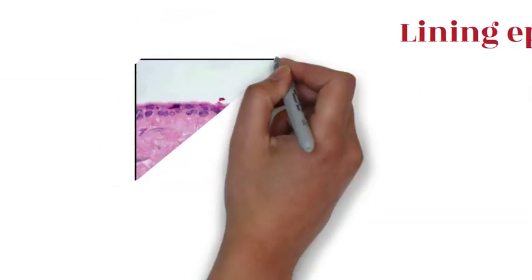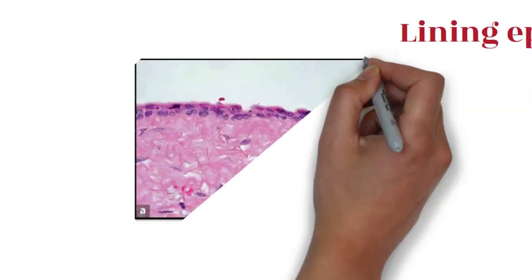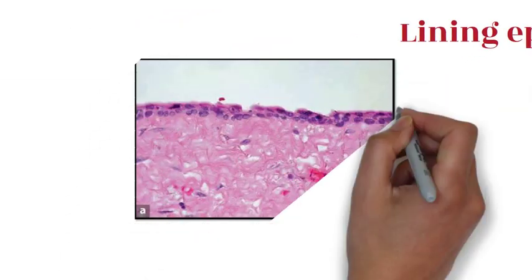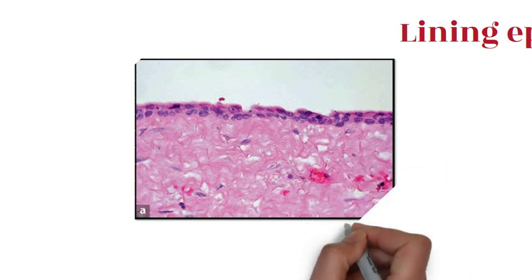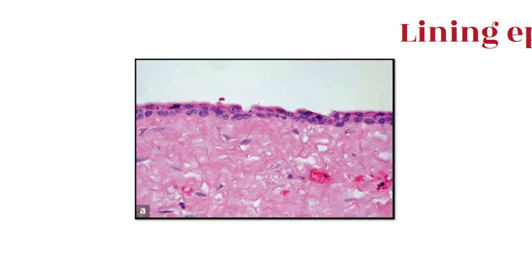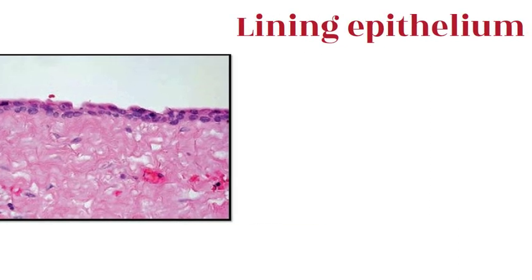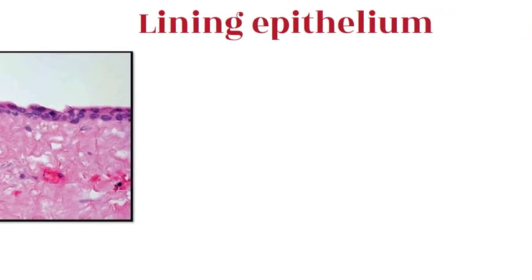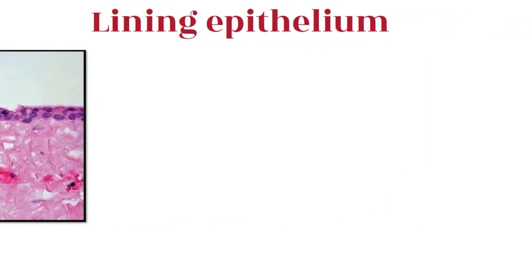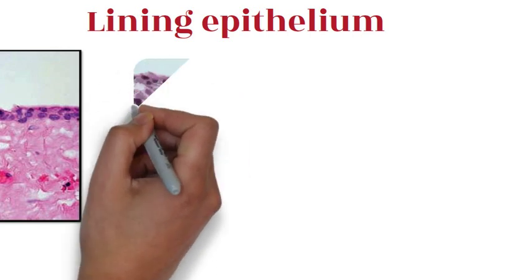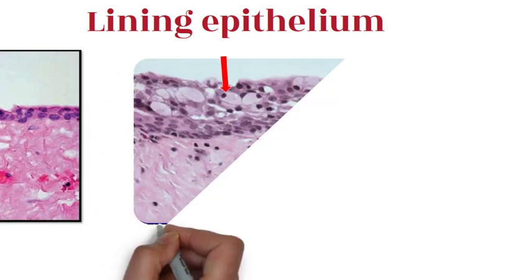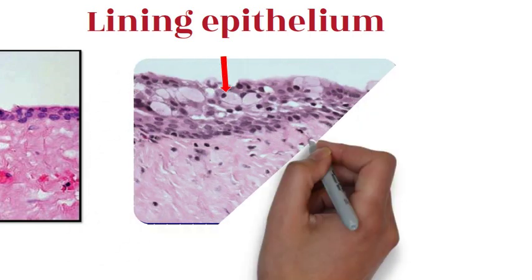The epithelial lining is made up of 2 to 4 cell layers thick of non-keratinized epithelium, which appears flat to cuboidal in shape, resembling reduced enamel epithelium. There is also presence of mucous cells in the lining epithelium.